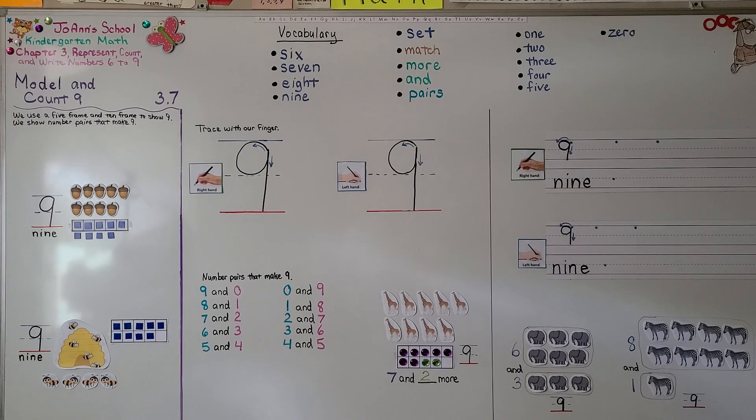So we can use a full 5 frame with 4 below it to show 9, and we can also show 9 on a 10 frame with 1 missing. That would be 9, and we know the number pairs that make 9.